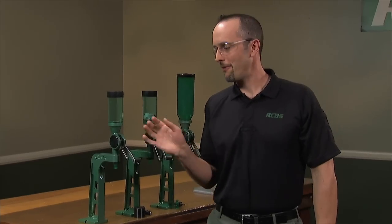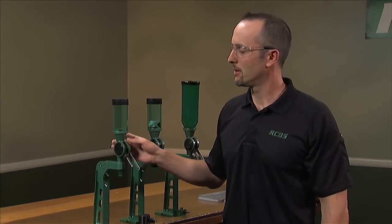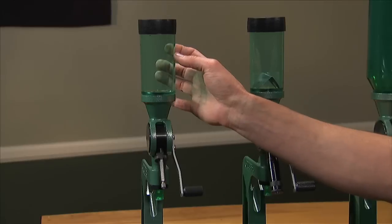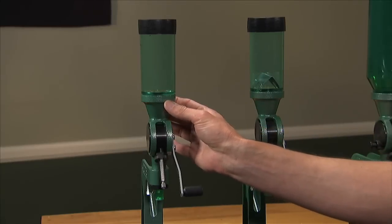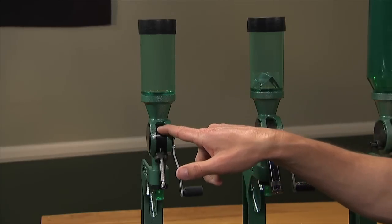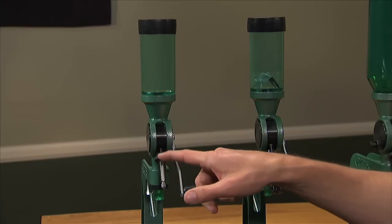The standard powder measure platform is our Uniflow. It consists of a plastic hopper, a cast iron main body, a hardened steel cylinder, and a metering screw assembly.